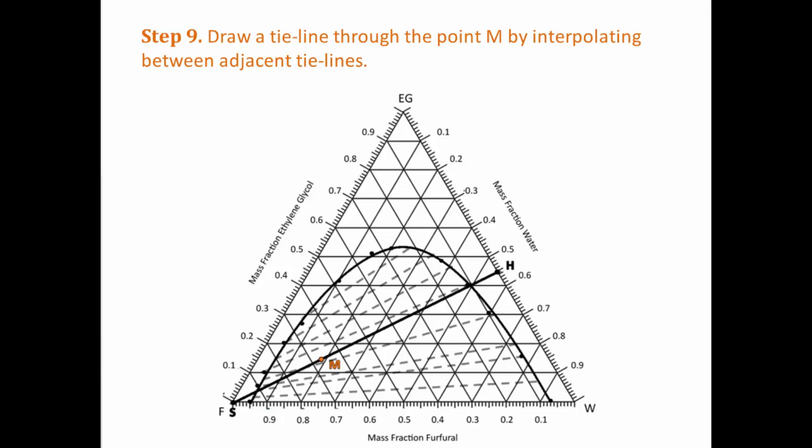Interpolate between the tie lines above and below the mixing point to find the tie line that passes through the point M. The ratio between the point M and the lines above and below should be maintained.